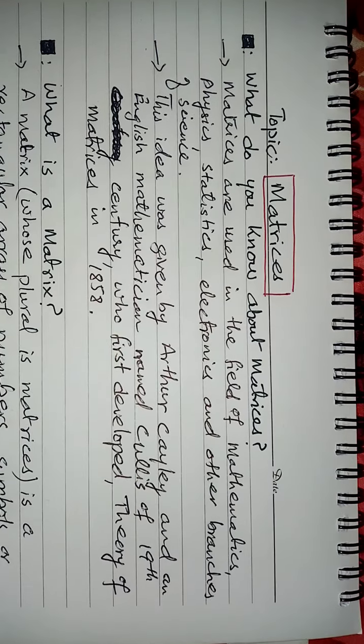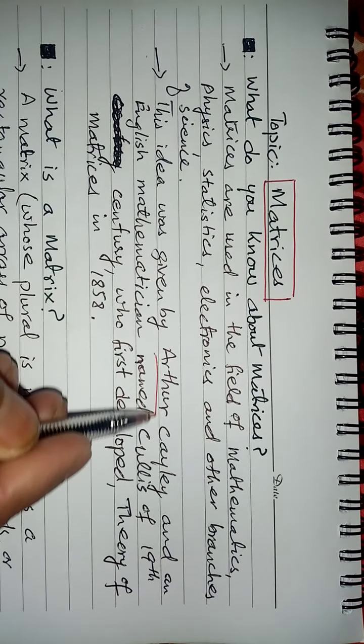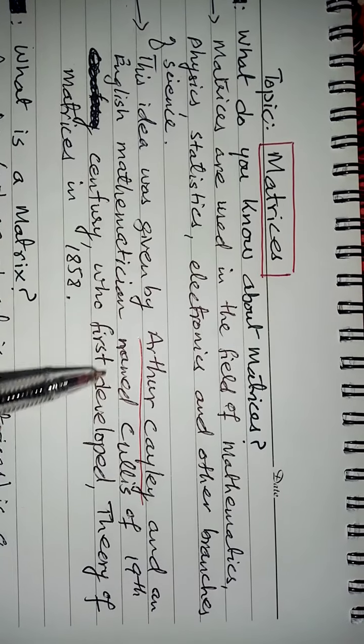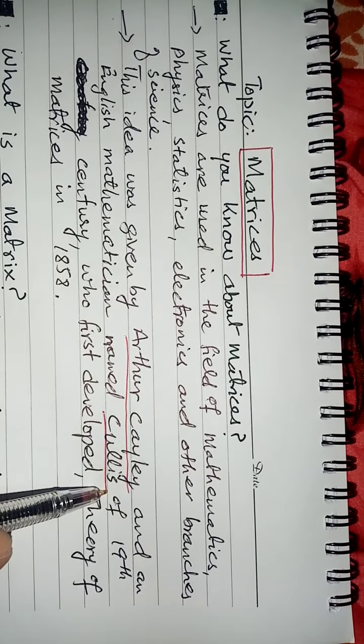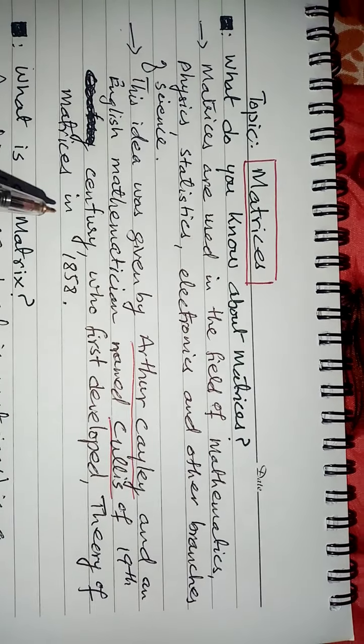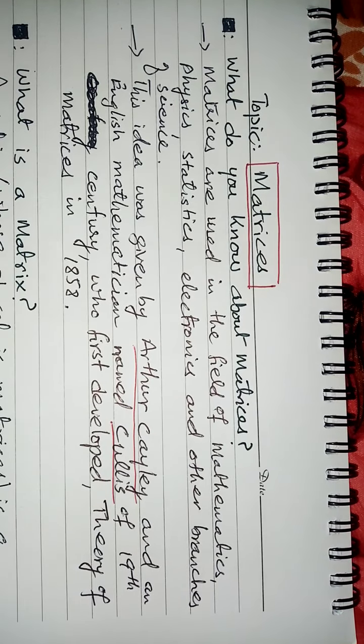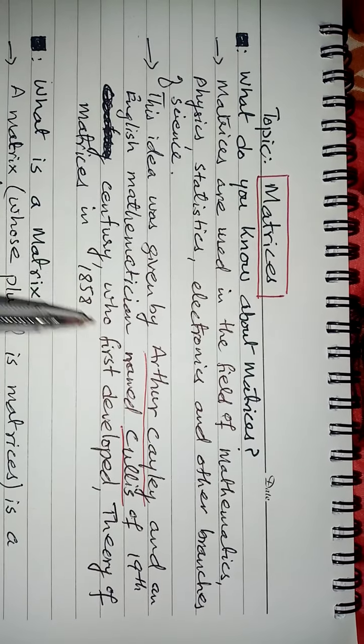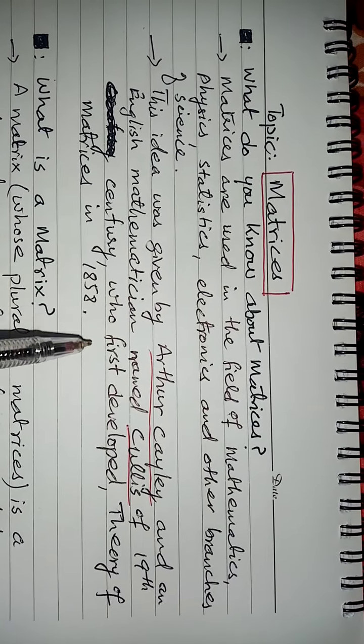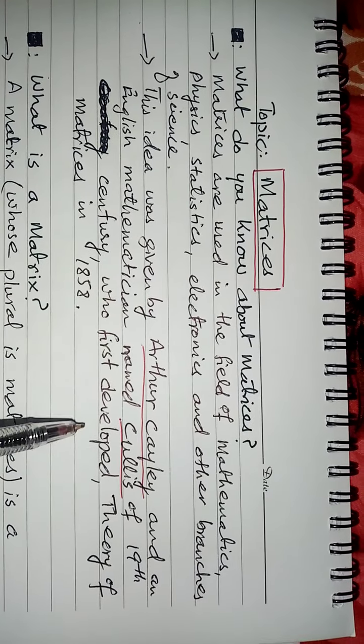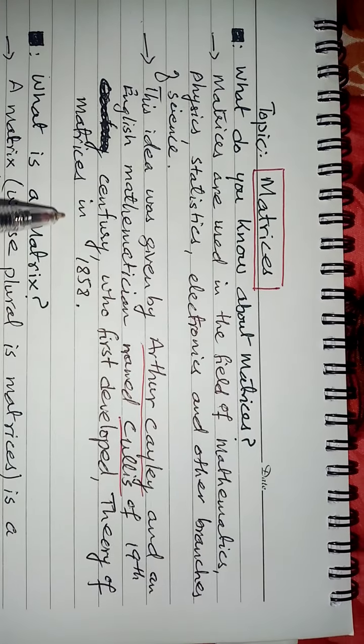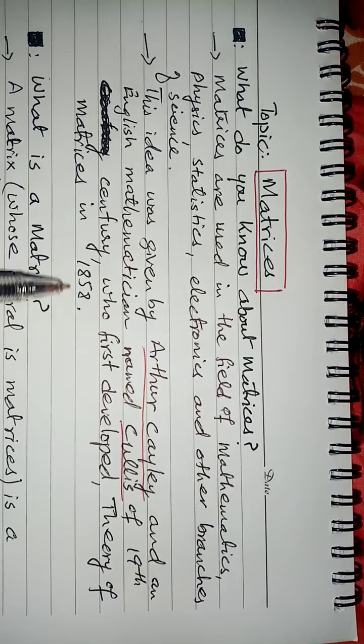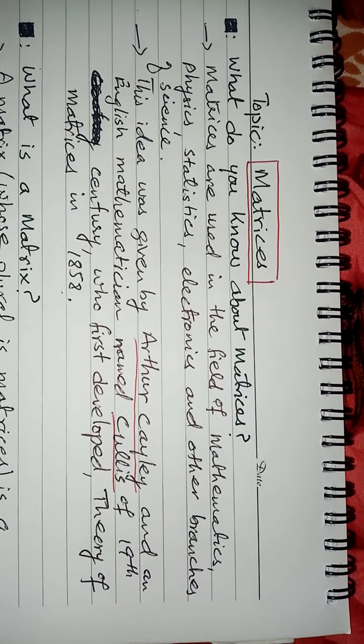This idea was given by Arthur Kelly and an English mathematician named Cullis of 19th century. These are two mathematicians who have given this idea in the 19th century. But they first put theory of Matrices in 1858. So what is a matrix?